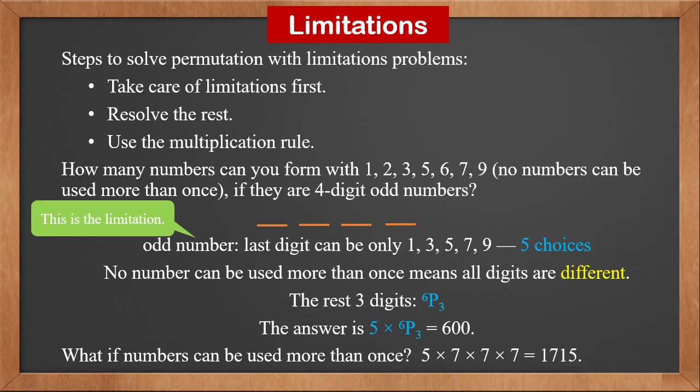What if numbers can be used more than once? In this case, we simply use the multiplication rule. Again, there are five choices for the last digit. Since numbers can be reused, each of the remaining three positions will have seven choices. So the answer is 5 × 7 × 7 × 7, which is 1715.